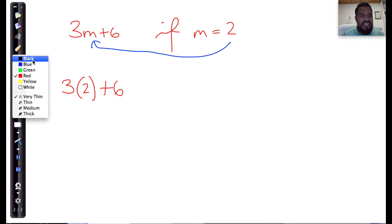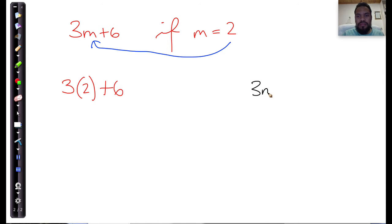Now one of the things that you must notice and take a note, write this down, especially if this work is new to you, is that 3m can also be written as 3 dot m, and it can also be written as 3 times m. This means 3 multiplied by m.